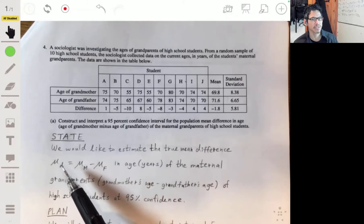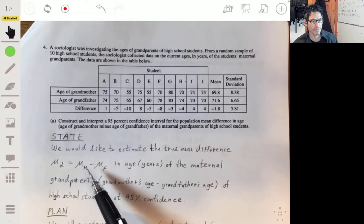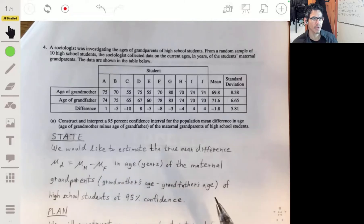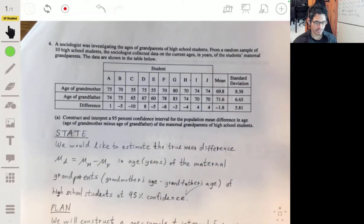where the mean true main difference is equal to the true mean of the grandma minus the true mean of the grandfather at 95% confidence. Mention the confidence level as well.